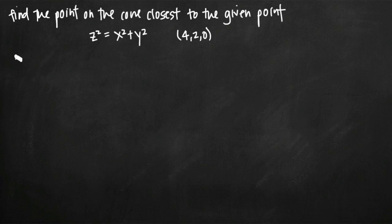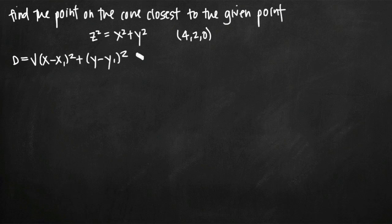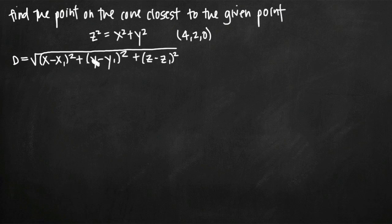Remember our distance formula in three variables: d = √[(x − x₁)² + (y − y₁)² + (z − z₁)²]. That's the formula that gives us the distance between two coordinate points in three-dimensional space.